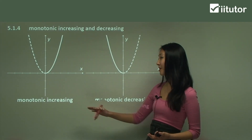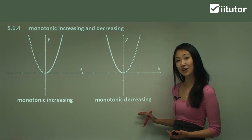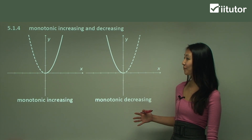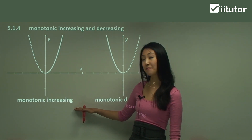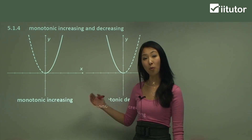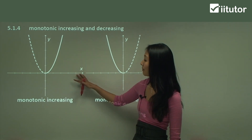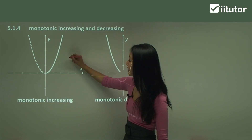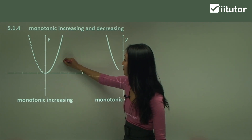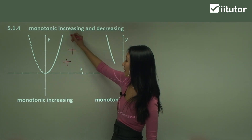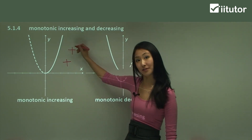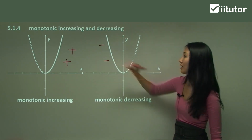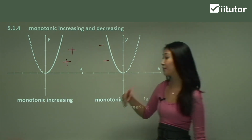I want to revise the terms monotonic increasing and monotonic decreasing, because these terms will come up when we're asked to find the inverse of a function. Monotonic increasing means a portion of the curve which is always increasing. As part of this parabola, you can see the gradient is always positive. Whereas when it's decreasing, that's the portion when the gradient is always negative — so that's a good way to remember this.